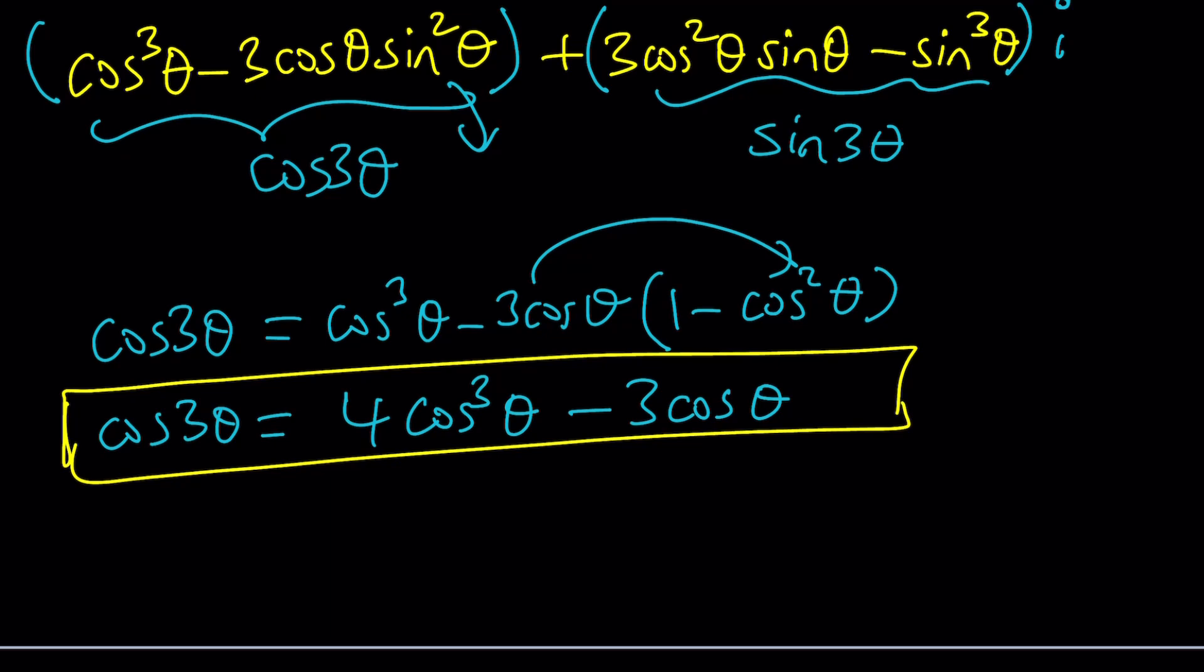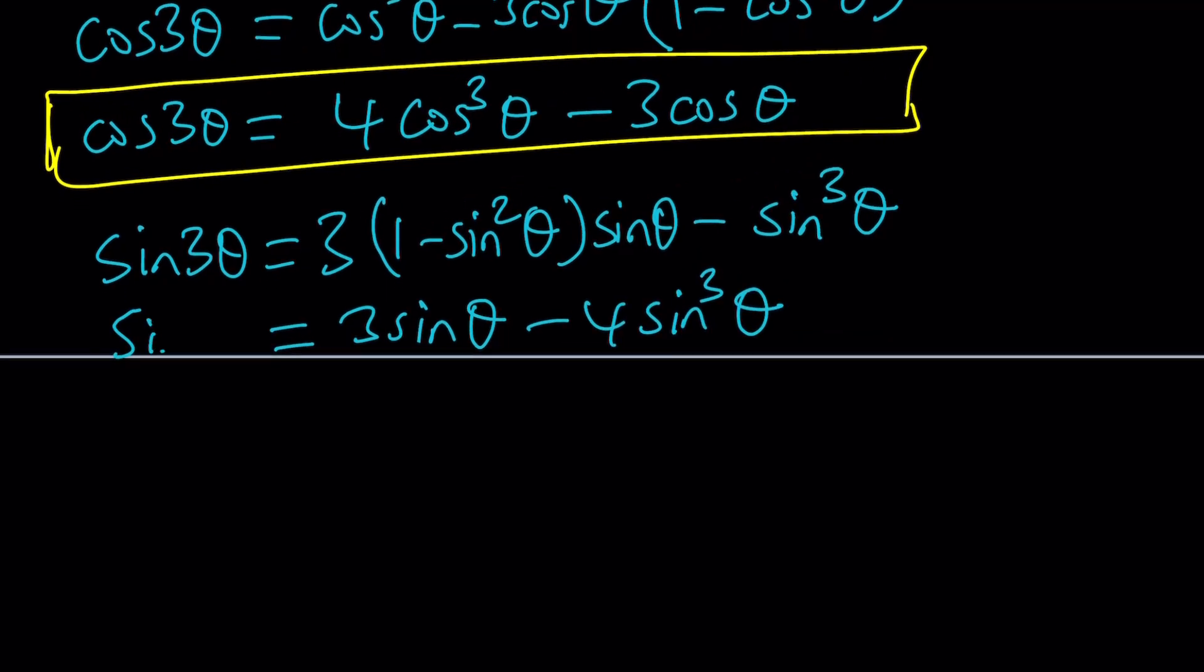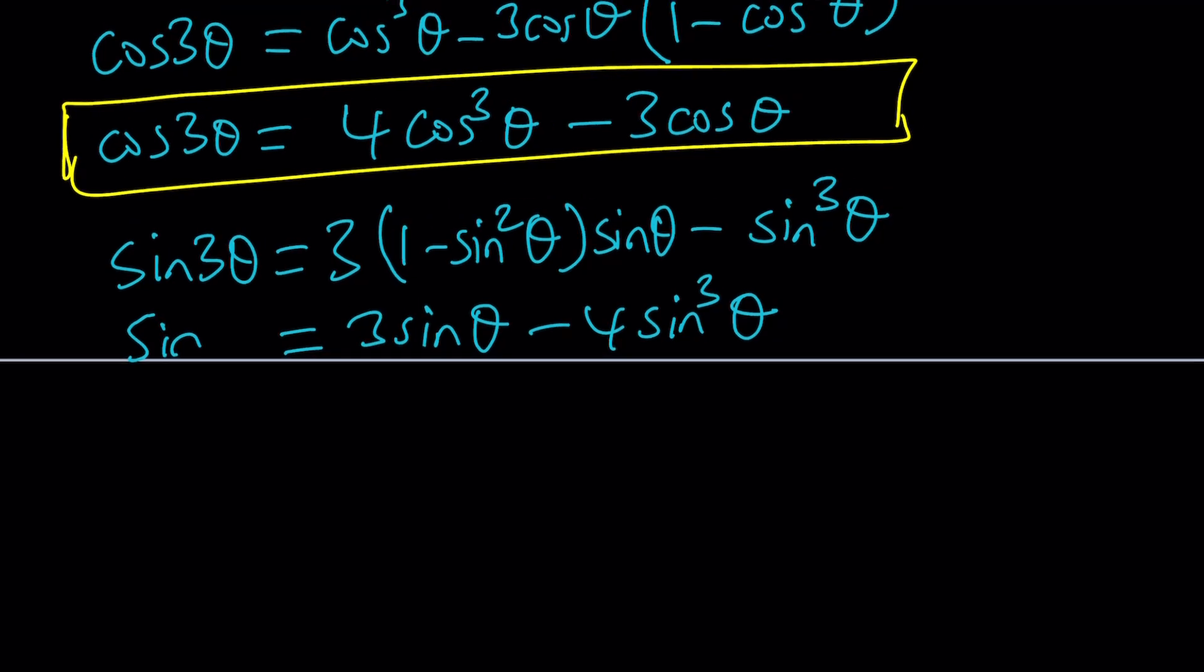And the value of sine 3 theta is going to be the following. We get 3 cosine squared. And actually let me replace cosine squared with 1 minus sine squared because I want everything in terms of sine squared here because it's sine 3 theta times sine theta minus sine cubed theta. Let me go ahead and finish this, simplify this. And I'm going to clean up and put those two together. And sine 3 theta from here is just going to be 3 sine theta minus 3 sine cubed another sine cubed so minus 4 sine cubed theta. And this is sine of 3 theta.